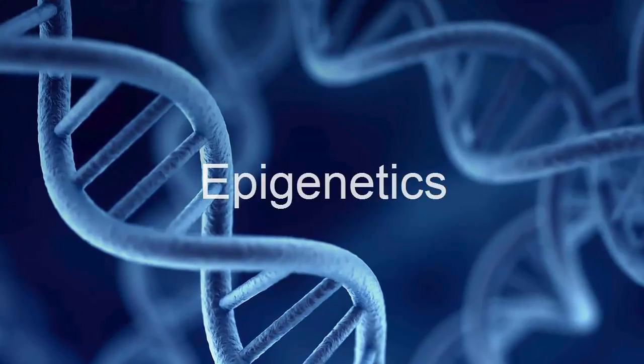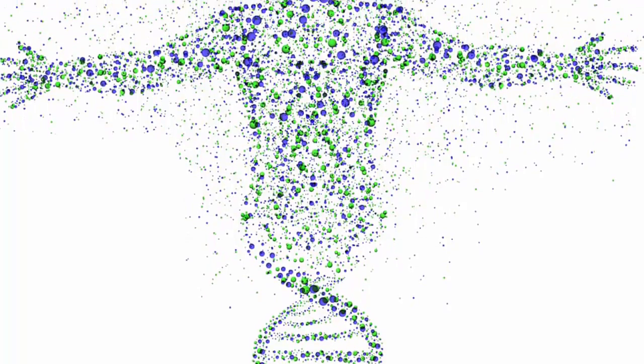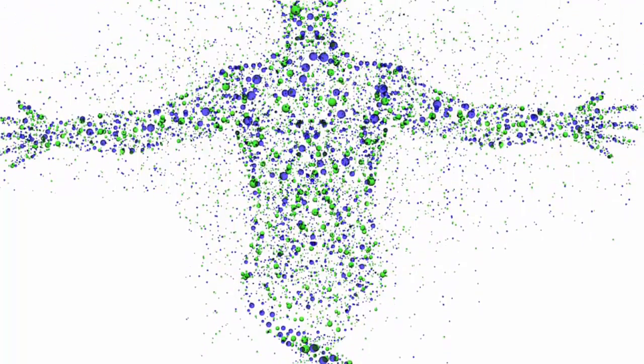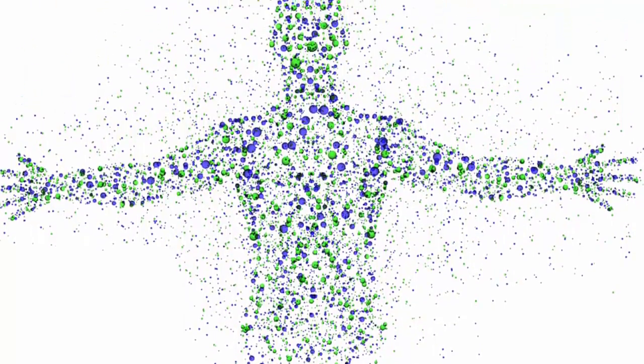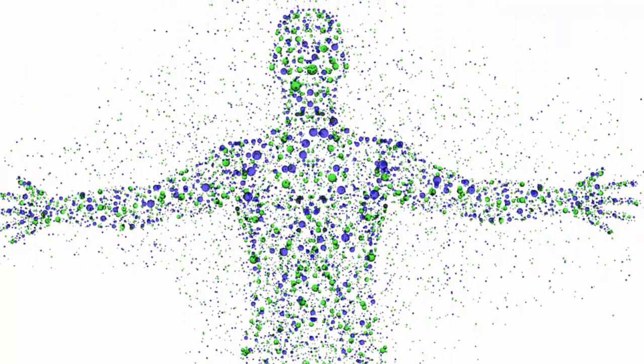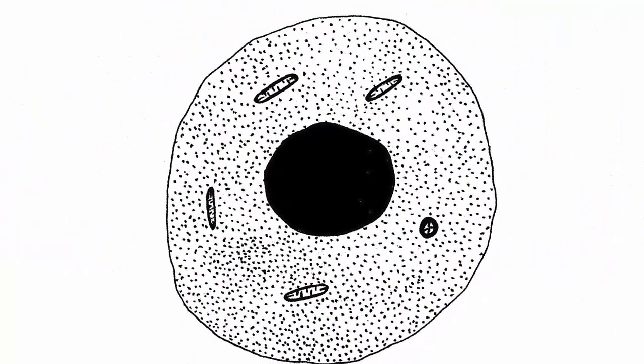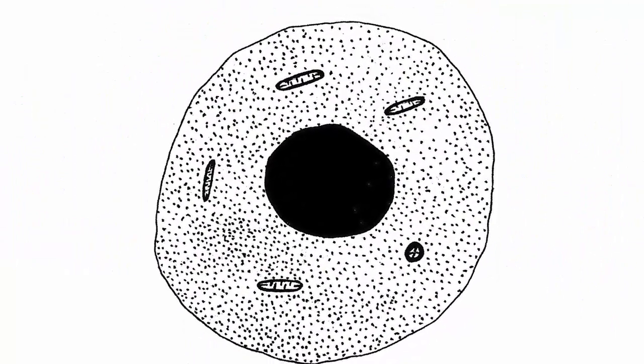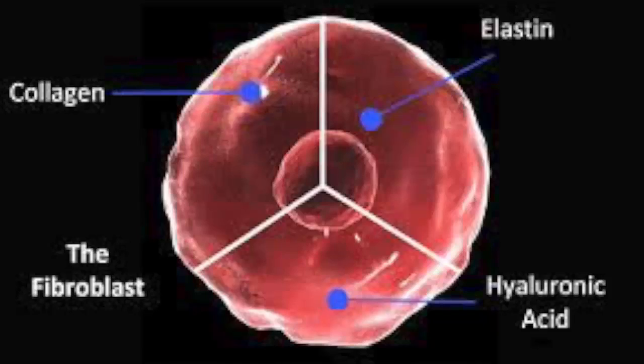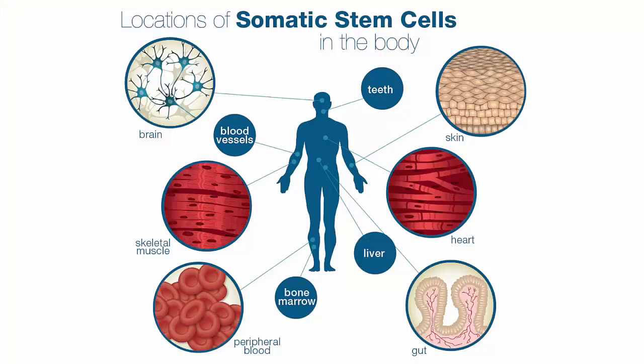Genetics are the blueprint of the entire body in each cell. By the time it differentiates during its embryonic transformation, it either becomes a liver cell, a skin cell, a brain cell, or something like that. So once it differentiates, that's all it will do.